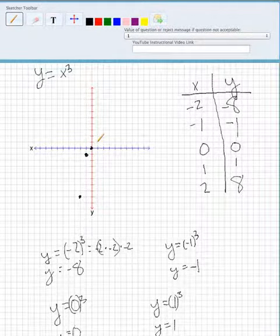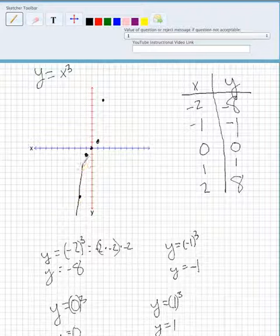I'm going to graph that point at (2, 8) and then this point up here. And that's going to be our x cubed graph.